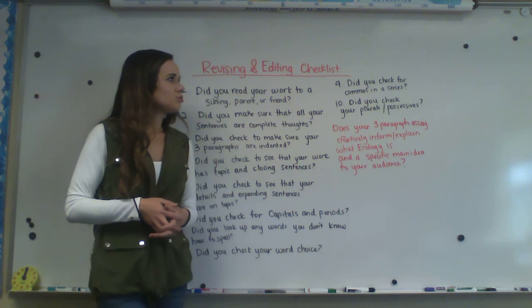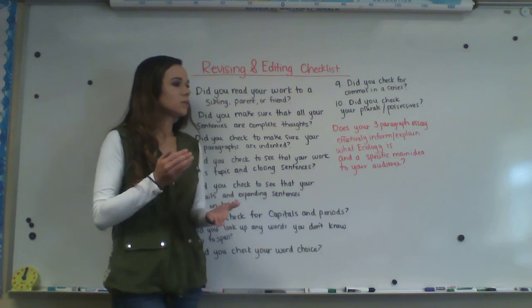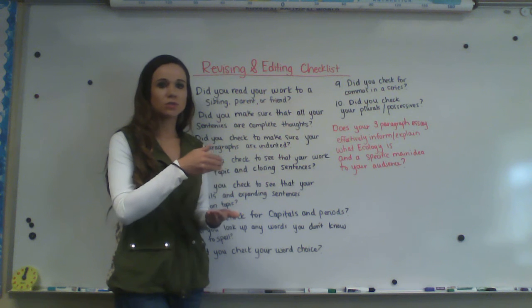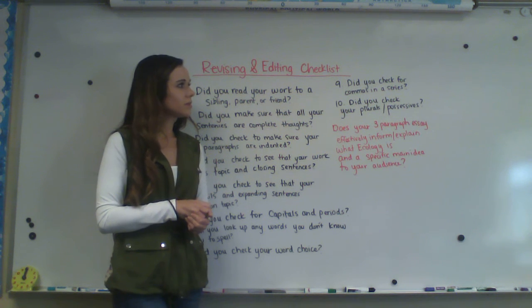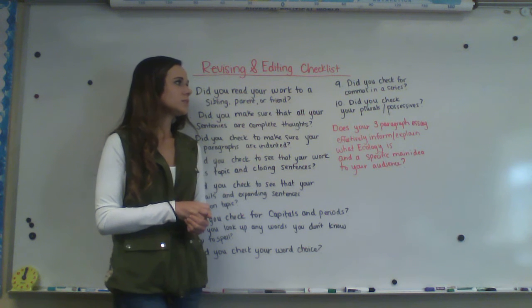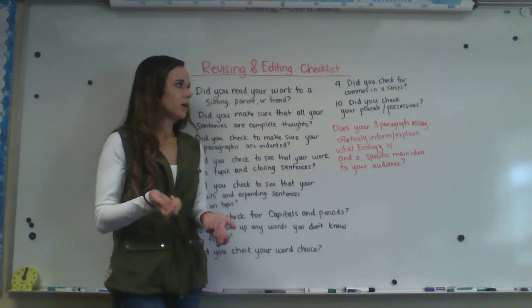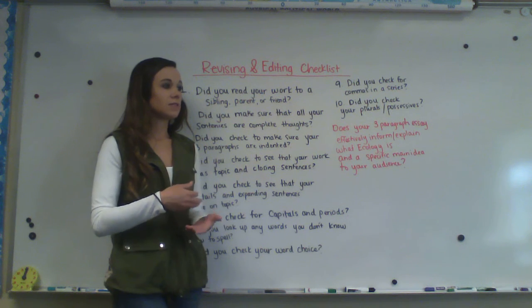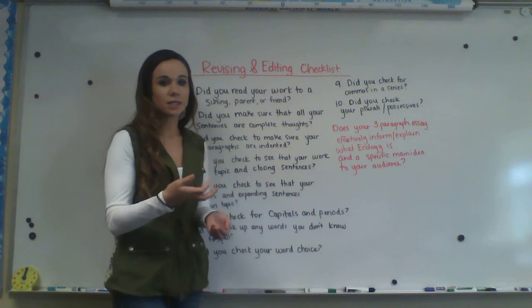Number nine: did you check for commas in a series? When we're talking about a series of things like dogs, cats, and hamsters, we use commas to separate those things. Number ten: did you check your plurals and possessives? When we are talking about a decomposer — a specific decomposer — or we're talking about decomposers, we're making sure that the S is on the end to make it plural.